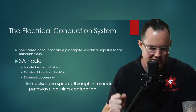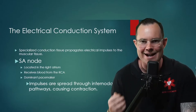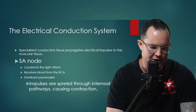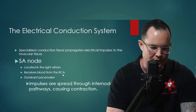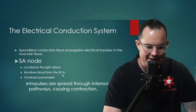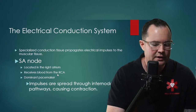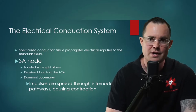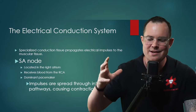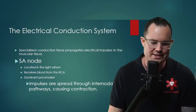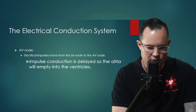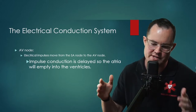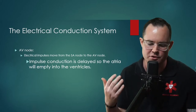Getting back into the conduction system — the SA node, known as the sinoatrial node, is specialized conduction tissue that propagates electrical impulses to the muscular tissue of the atrium. The SA node is located in the right atrium, receives blood from the right coronary artery, and is the dominant pacemaker of the heart. For the AV node recap: electrical impulses move from the SA to the AV node, where conduction is delayed to allow the ventricles to fill.